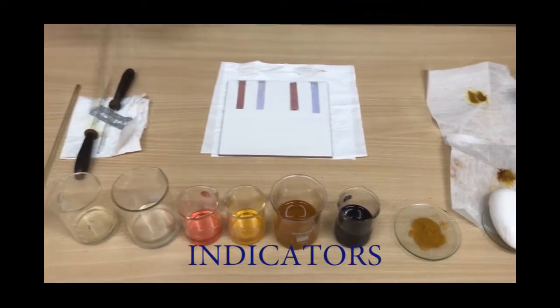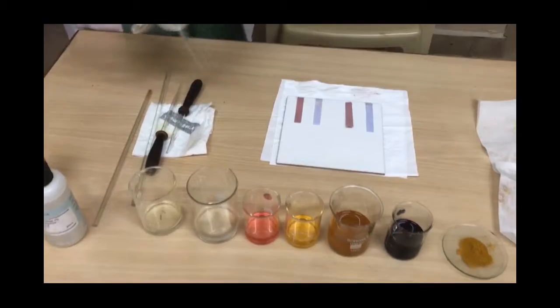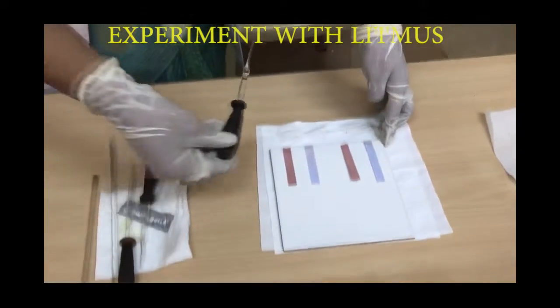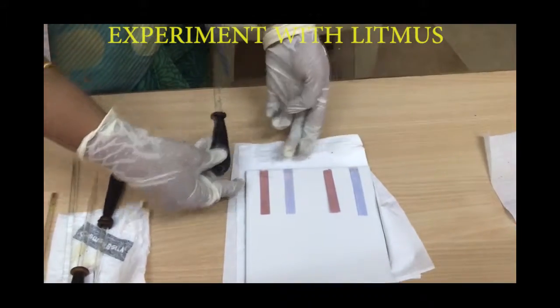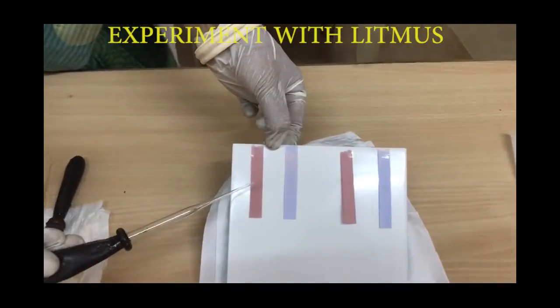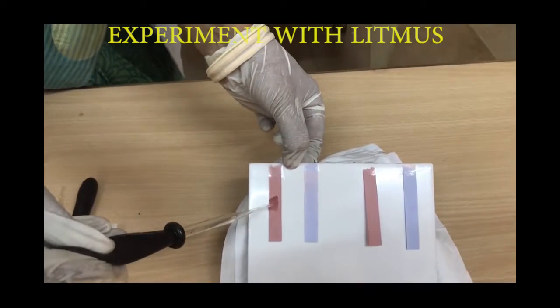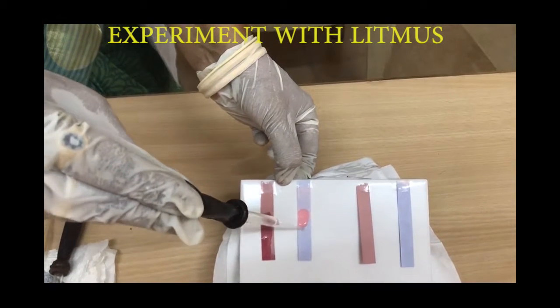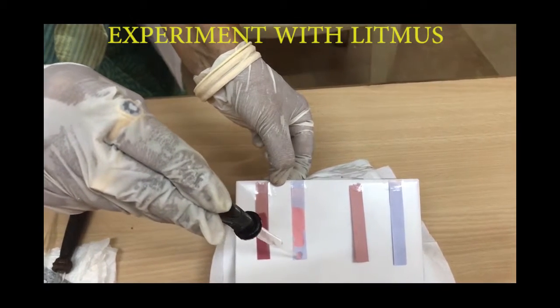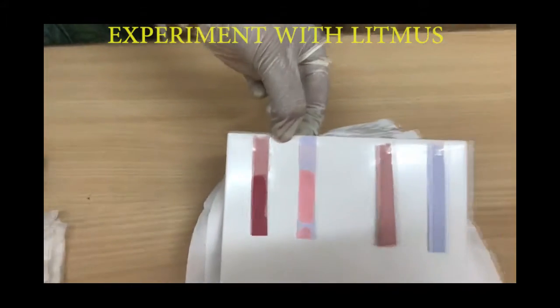Now, I put a drop of a solution on red litmus paper and blue litmus paper. Let's see the color change. Red remains red and blue changes to red, showing the presence of an acid.